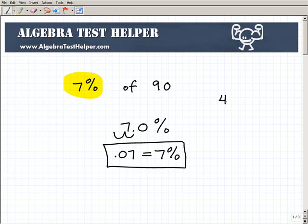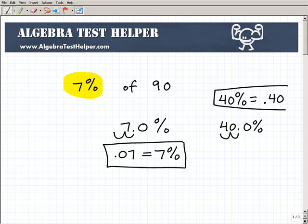How about 40%? How would you write that as a decimal? 40% is the same thing as 40.0%. We move the decimal point two spaces to the left. So that's going to be 1, 2. This is going to be the same thing as 0.40 or 0.4. So if you understand that, then you're set to do these problems.